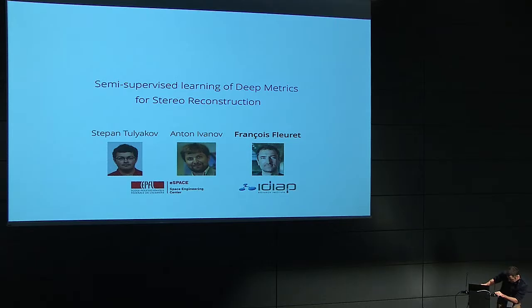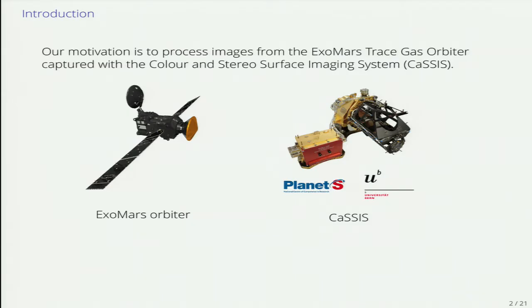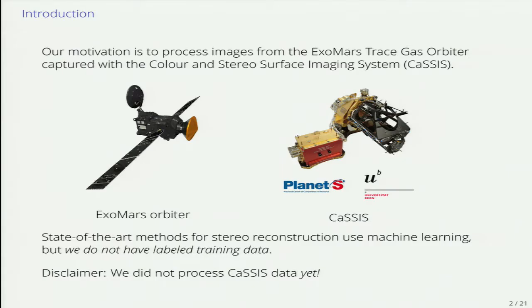Hi everybody. I'm going to talk about a project with the Space Center. This is a joint work with Stepan and Anton, who should both be in the room somewhere. I'm Francois Fleury. This project takes place in the context of the ExoMars Orbiter mission, and we want to process data provided by the CASIS imager which was built in Bern. The CASIS imaging system is a very sophisticated camera which is going to take pictures of the Mars surface, and the overall objective is to reconstruct the terrain of the planet.